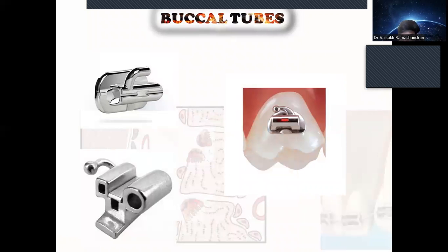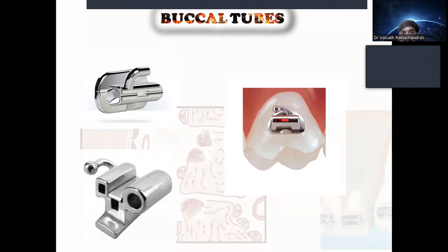Next is the buccal tube. We have already seen banding of molars — bands on the molars along with tubes. In modern practice, we mainly bond the molar tube directly onto the molar surface, similar to brackets. Buccal tubes are available as bondable types or as weldable types that come pre-welded with molar bands.